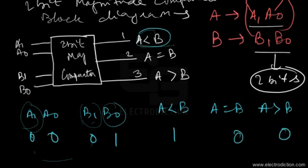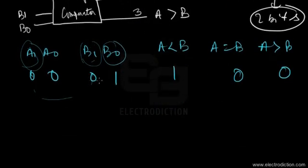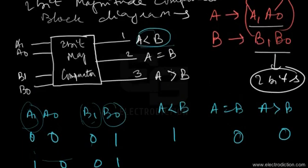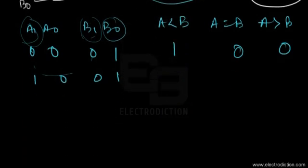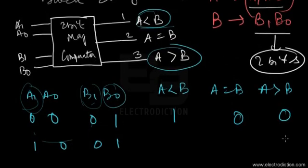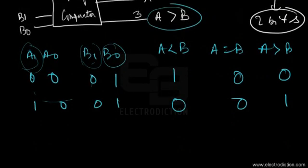In another situation, let's say A is 10 and B is 01 — reversed. Here B is less than A, since B=01 and A=10. Since A is greater than B, the output at terminal three goes to logic one, and the other two terminals remain at logic zero.